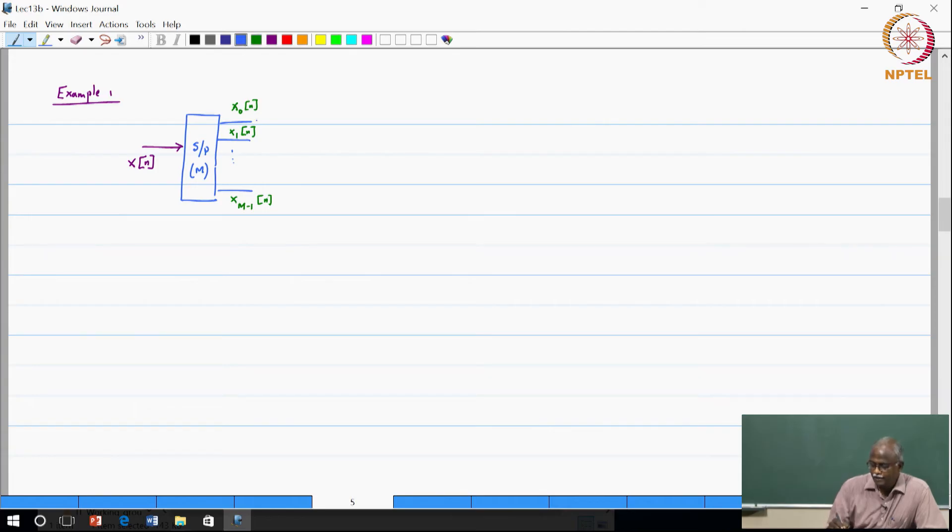Now I am going to ask you to apply a parallel to serial converter of the same dimensions M and then take the output. It is sort of a trivial example and this output is X of N. So no issues, very straightforward. Now that was not the main question. Now here comes the actually interesting question.